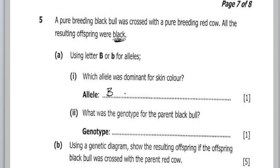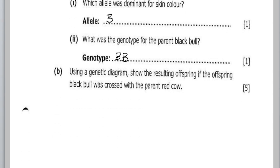We are asked for the genotype of the parent black bull. The term pure breeding corresponds to homozygous. Since the black bull is pure breeding and black is dominant (capital B), its genotype is BB — homozygous dominant.